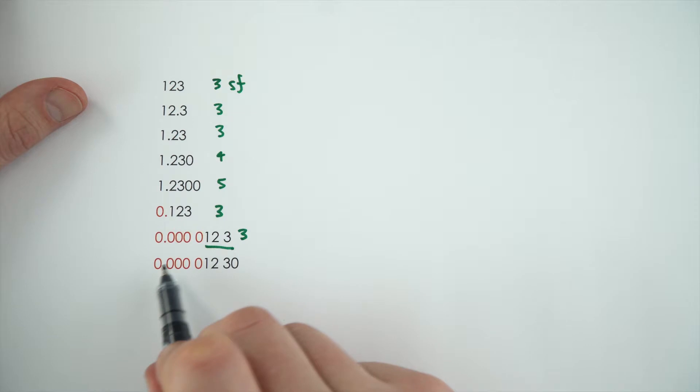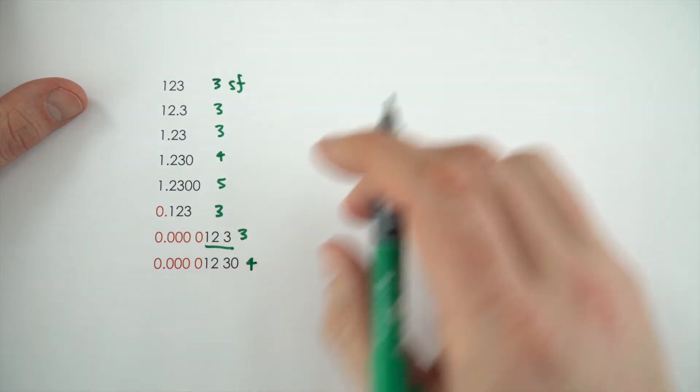And then finally, this one here. Again, these ones don't count. The last zero does. So, this is given to four significant figures.